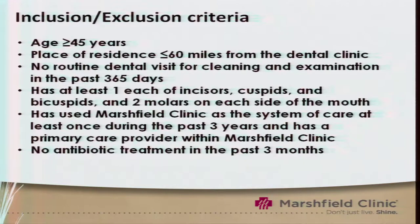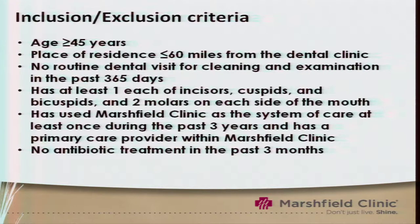For inclusion-exclusion criteria at the Marshfield Clinic, importantly, we want to make sure that these individuals have both the electronic health record and electronic dental records — that they see our dentists, have a primary care provider in our system, and haven't had antibiotic treatments in the past three months. We've started recruitment and that seems to be going pretty well. We are interested in recruiting about 2,000 such patients.